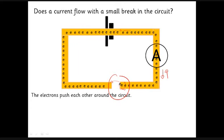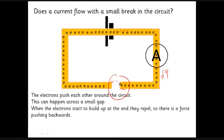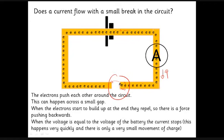The electrons push each other around the circuit. Across a small gap, the electrons can push the ones away on the other side. When there's a build-up of charge, eventually those electrons repel and push backwards. When the voltage from these electrons pushing back is equal to the voltage of the battery pushing current around the circuit, there'll be no more current flowing. So that doesn't really tell us much about capacitance.